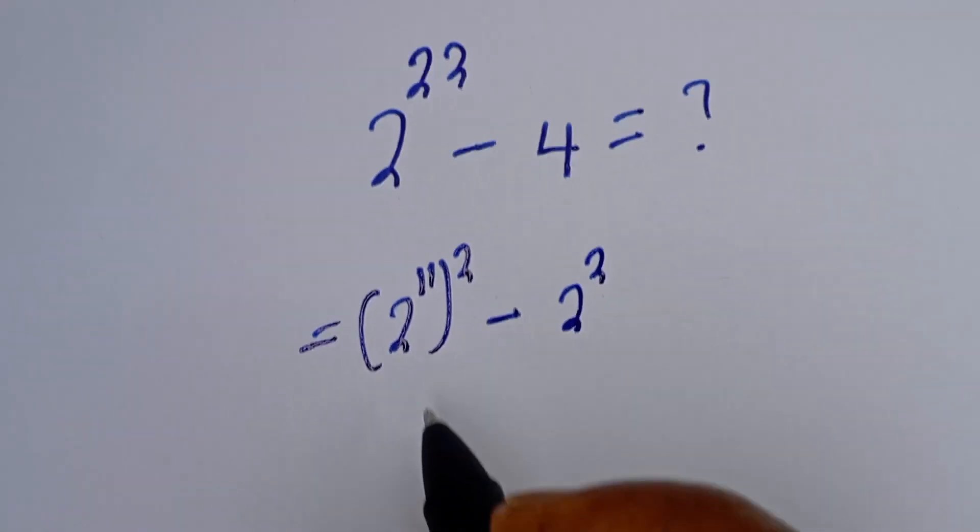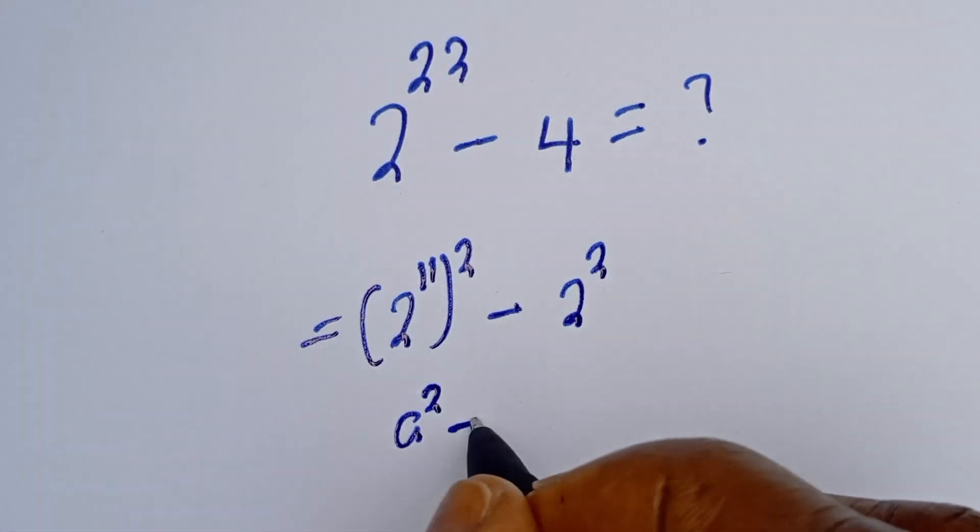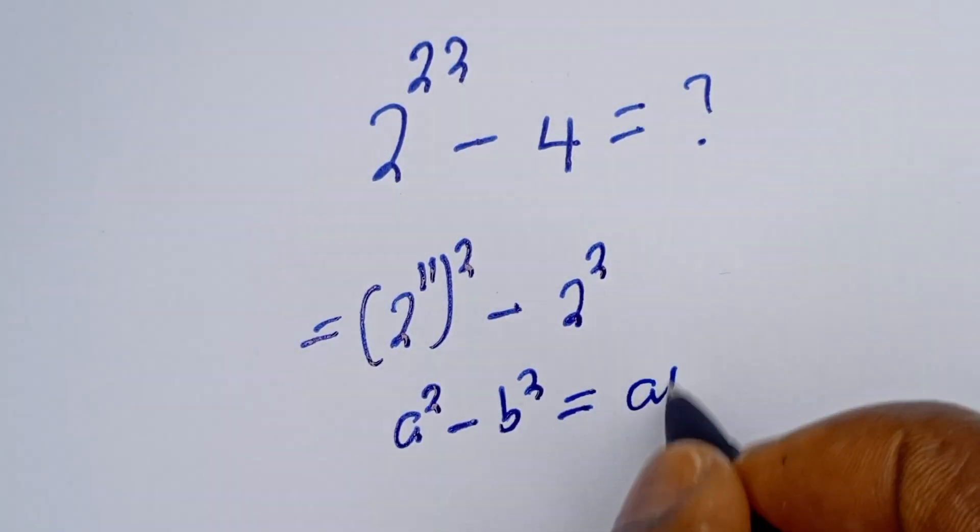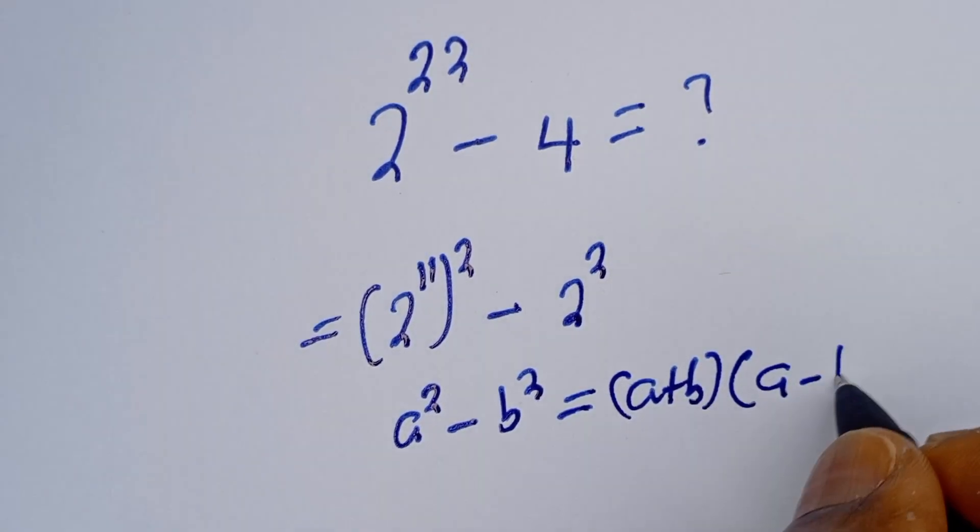Now take note of this: if you have A to the power of 2 minus B to the power of 2, this is equal to A plus B bracket A minus B.